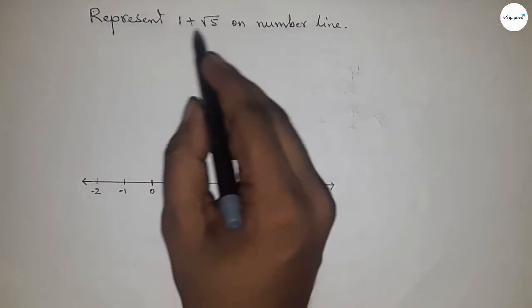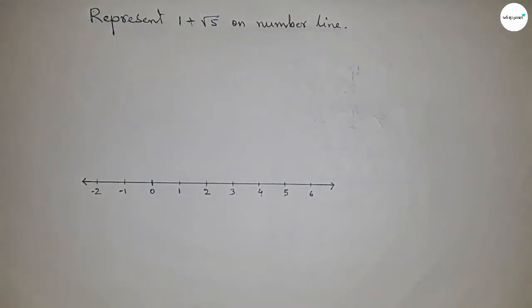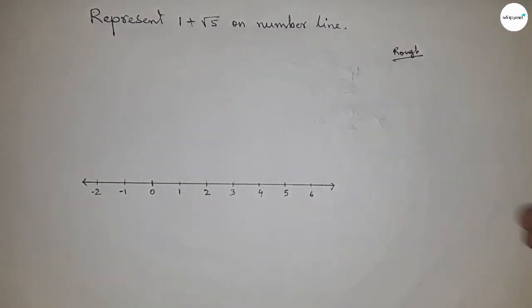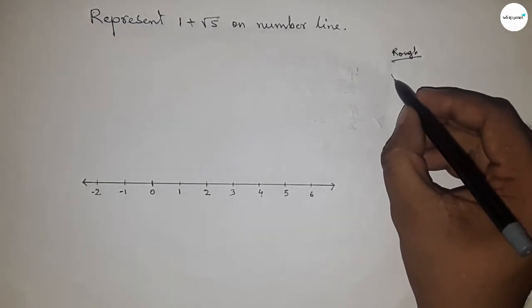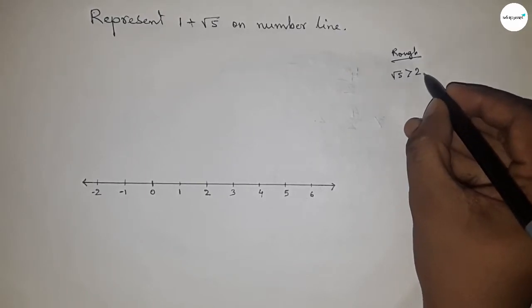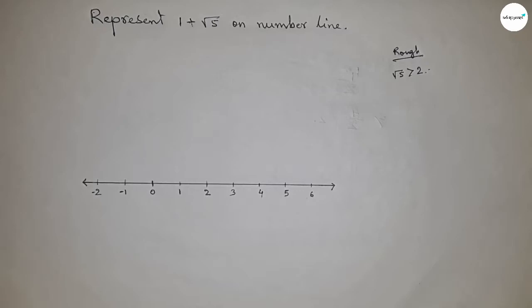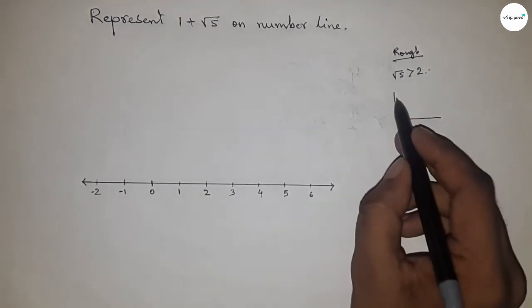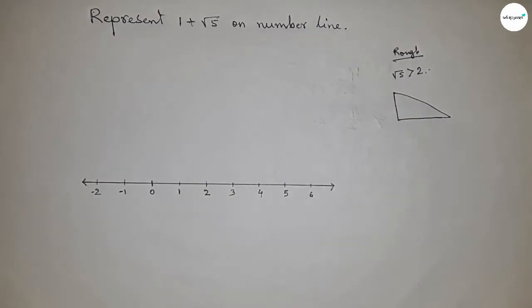Now let's discuss 1 plus root 5. The value of root 5 is always greater than 2. So we have to represent 1 plus root 5 between 0 and 3. First we leave 1 unit from 0 to 1, then we represent root 5 between 1 and 3.